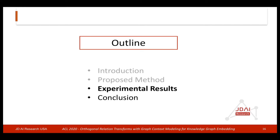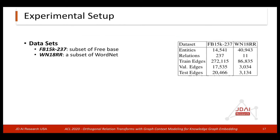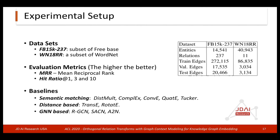Next, I'll show our experimental setup and results. We use the common benchmark datasets Freebase 15K-237 and WordNet 18RR. We use commonly used evaluation metrics: mean reciprocal rank (MRR) and hit ratio at 1, 3, and 10 — the higher the value, the better the performance. We compare our model with various baselines including semantic matching models, distance-based models, and GNN-based models. Some of these models are state-of-the-art.